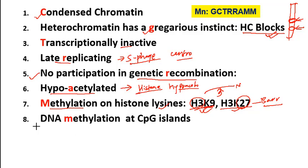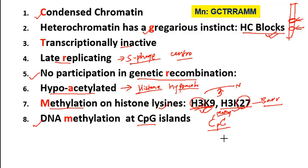Heterochromatin can also have DNA methylation at CpG islands — wherever a cytosine is followed by a guanine (connected by a phosphodiester bond), that cytosine will be methylated. You will find more cytosine methylation in heterochromatin.